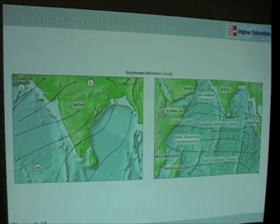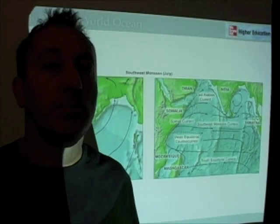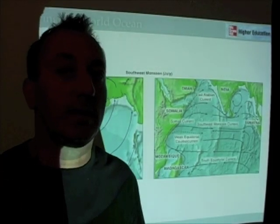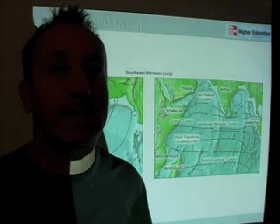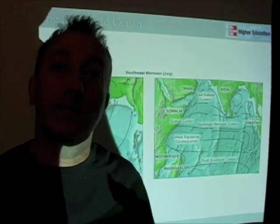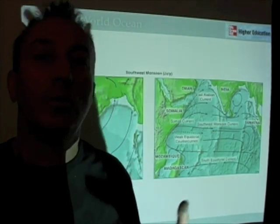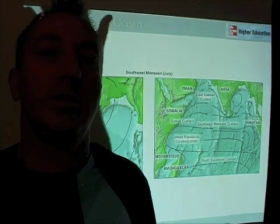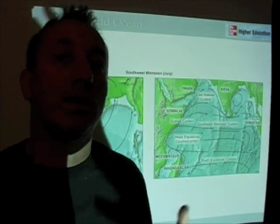They get three months of solid rain in India. It's really extreme weather that often leads to landslides and those kinds of things. It's a very beneficial time though, because this is really what recharges the aquifers for rice cultivation and those kinds of things — a very important part of life in this part of the world.